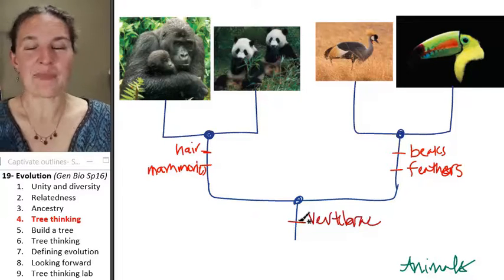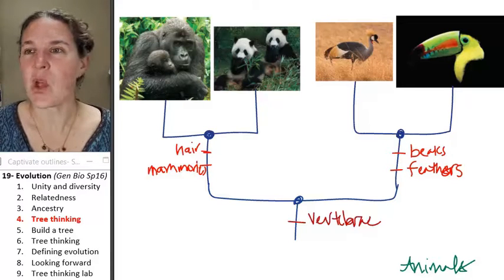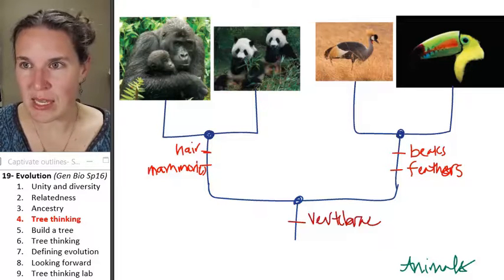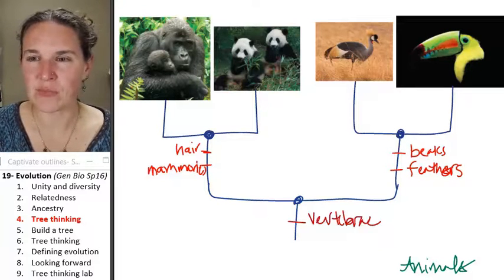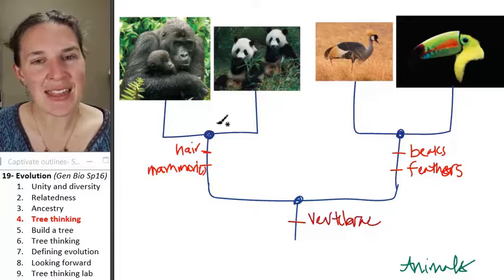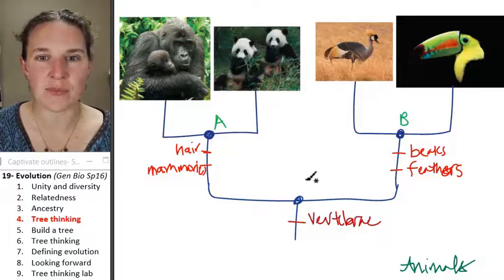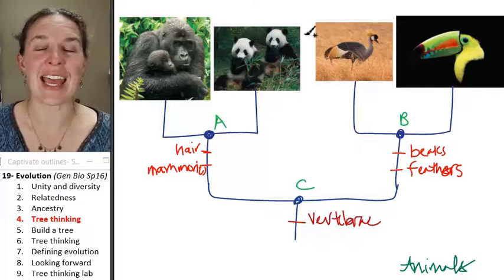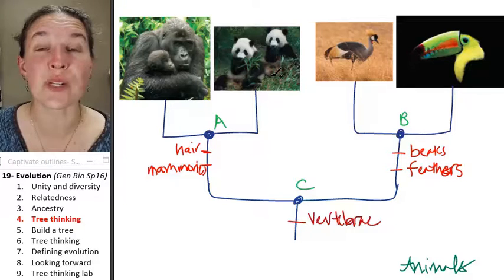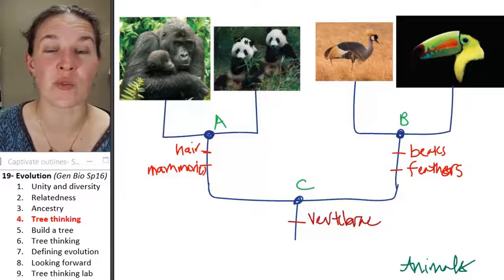It's not all, like I said, it's a hypothesis. We could number the ancestors and then we could talk about relatedness in reference to the ancestors. So I could, again, say, name the ancestor, the most recent common ancestor shared by the gorilla and the panda.